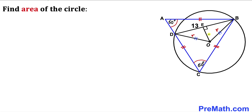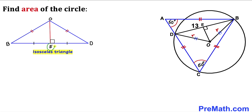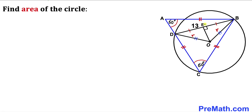Next, drop a perpendicular OE onto line BD. Since triangle OBD is isosceles and OE is perpendicular to BD, segment BE equals segment ED. So point E is the midpoint of BD. Therefore BE = ED = 13 divided by 2 units.